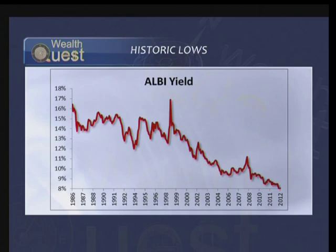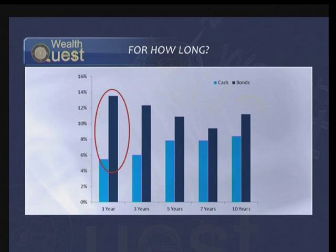Bonds have outperformed cash quite handsomely over time, especially over the last decade, but with that comes a commensurate amount of risk. Looking at the ALBI — the All Bond Index in South Africa — and its yield since 1986, as yields continue to drop you've been making quite a bit of money out of bonds. Charts show bonds have outperformed cash over one, three, five, and ten years, but that's not necessarily going to be the case going forward, especially when yields start spiking.